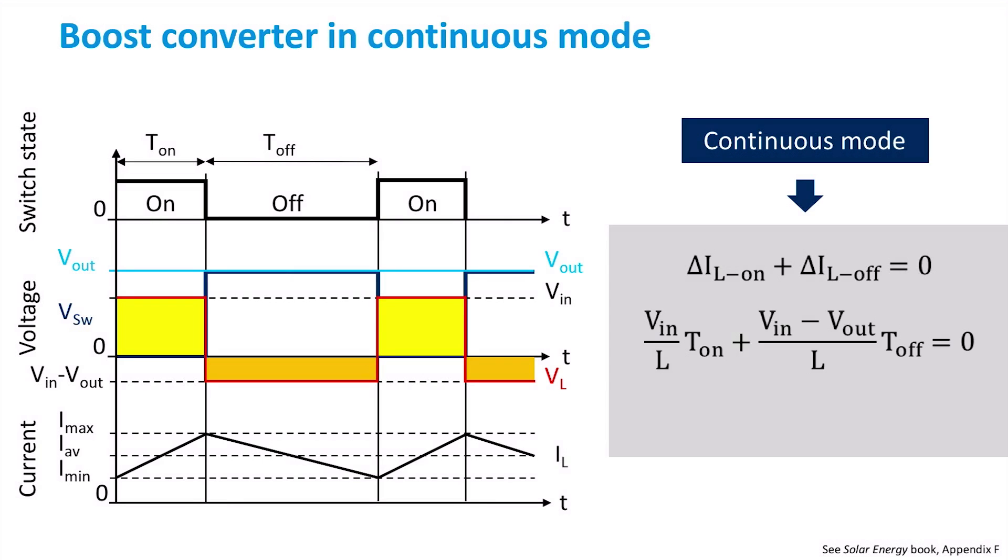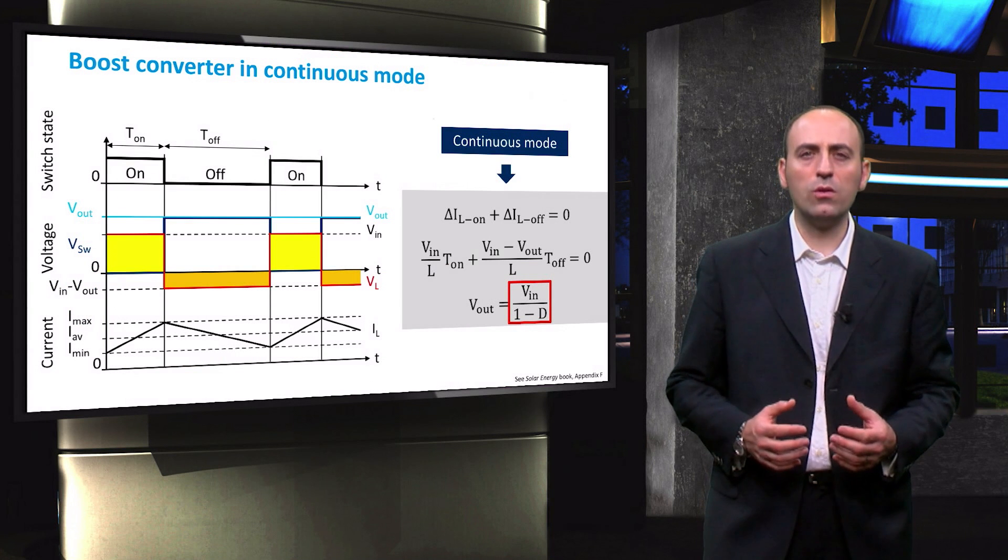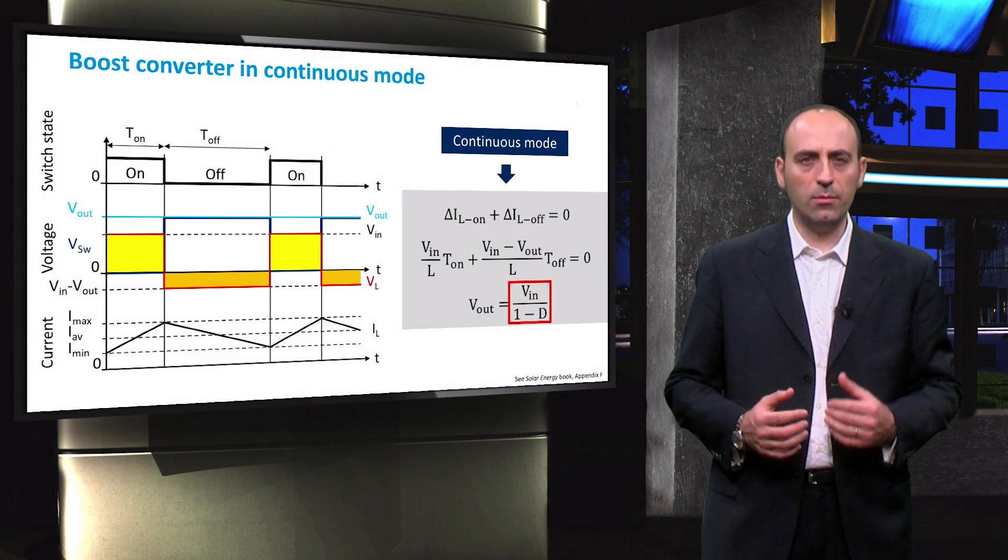By means of the result of the two integrals previously obtained, we can work out this equation that establishes a relation between the output voltage and the input voltage as a function of the duty cycle. Since D can be any number between 0 and 1, then the denominator is always lower than 1, and thus the DC output voltage is always higher than the input.